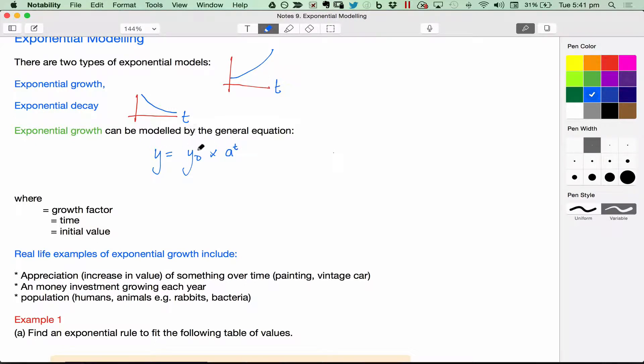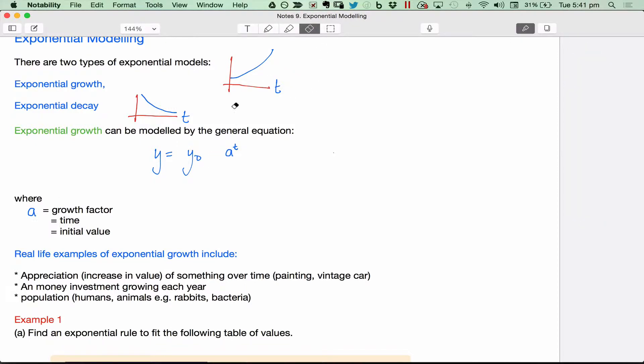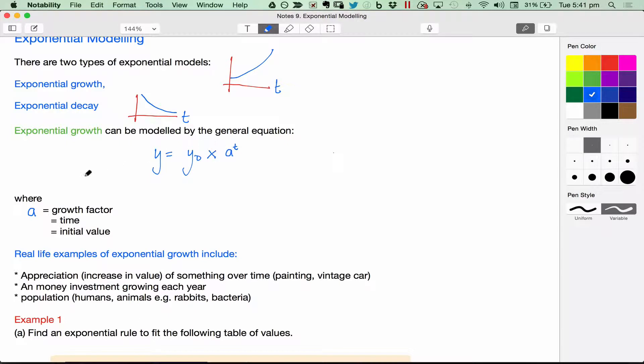We've got a here is the growth factor. I just realized this times looks a bit funny. So I'll fix that up. A is the growth factor. And you can find the growth factor by doing the second y-value divided by the first y-value. And I'll give you an example of what that means in a moment. But it's telling you how much is it jumping up by each time? Is it doubling? Is it tripling? How much is it increasing by each step of the way? T equals time. And y-value is the initial value. So what it starts at, at time equals zero.